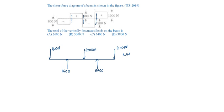The total downward load will be 800 plus 2000 plus 1000, which is 3800 Newton. Option D.